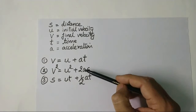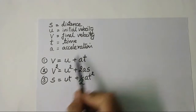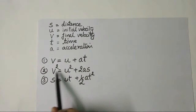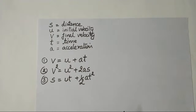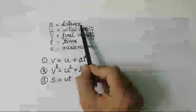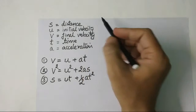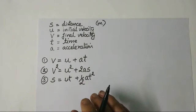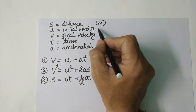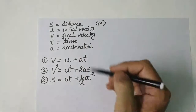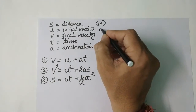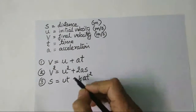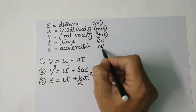The symbols used in the equations: v means final velocity, u means initial velocity, a is acceleration, and t is time. The SI unit of distance s is meters, initial and final velocity are in meters per second, time is in seconds, and acceleration is in meters per second squared.